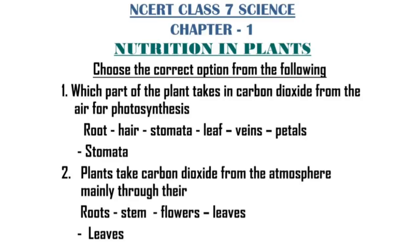Next, we have choose the correct option from the following. Number one: which part of the plant takes carbon dioxide from the air for photosynthesis? Options: root hair, stomata, leaf veins, petals. The answer is stomata. Number two: plants take carbon dioxide from the atmosphere mainly through — roots, stem, flowers, leaves. The answer is leaves.